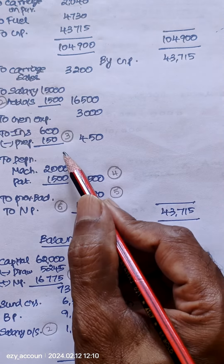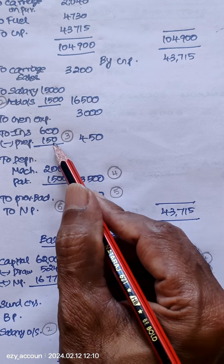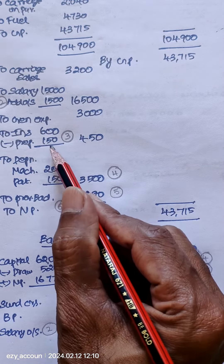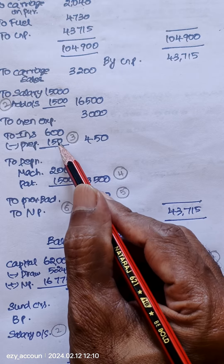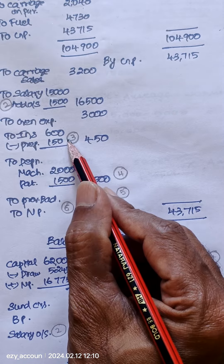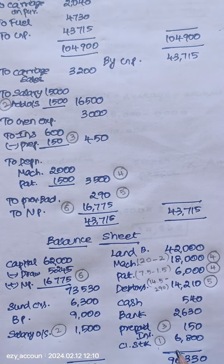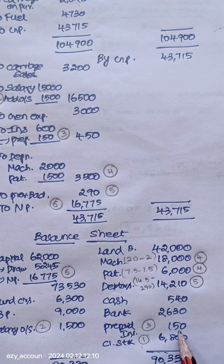The third adjustment is insurance prepaid — reduce it from insurance in the P&L. Since it is already prepaid, it is an asset, so show it as an asset in the balance sheet.